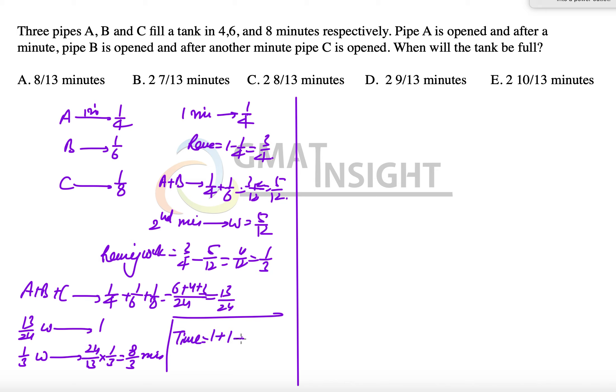So we can see that the total time is first one minute, then the next one minute when A and B work together, and the next is 8/13 minutes. So that becomes 2 whole number 8/13. The C option gives us exactly the same thing. So C option becomes the answer.